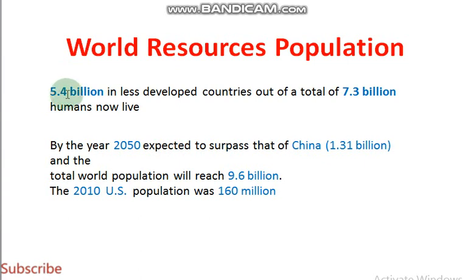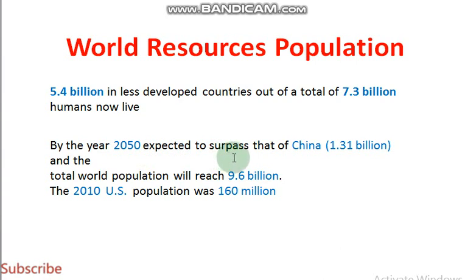If you look at the population, more population is in the less developed countries than in developed countries. You can see here 5.4 billion population is in the less developed countries, out of a total 7.3 billion humans now living in the world. By the year 2050, the population is expected to surpass that of China, at 1.31 billion humans, and the total world population will reach 9.6 billion.